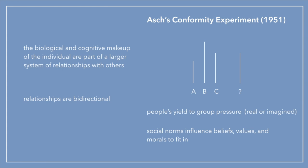Let's look at principle one. The biological and cognitive makeup of an individual are part of a larger system of relationships with others. A person's thoughts are not restricted to his or her own behavior and cognitive factors — it's actually a combination of one's individual thoughts and also social norms, group thoughts, and what the group thinks. Relationships are bi-directional, meaning an individual can influence a group and a group can influence the individual.